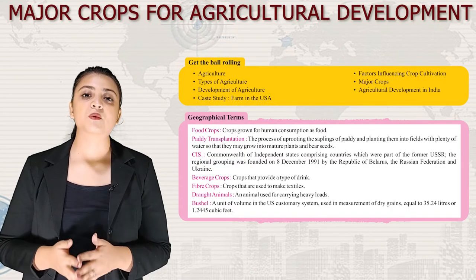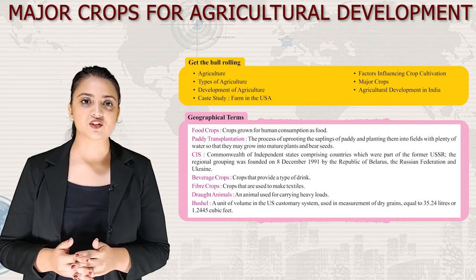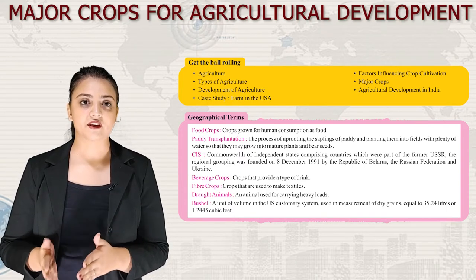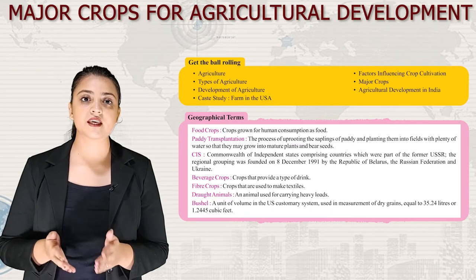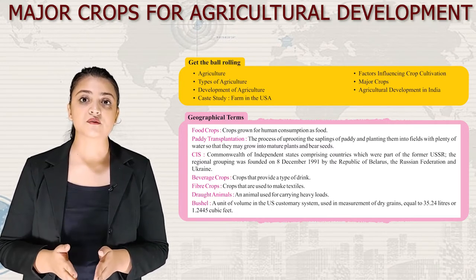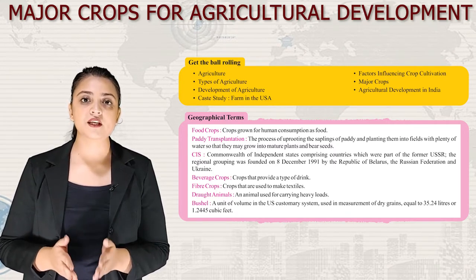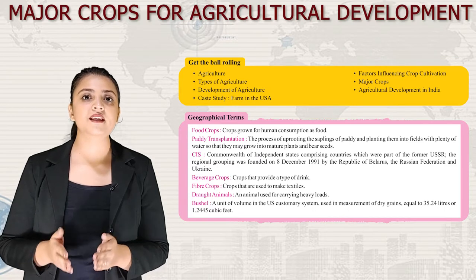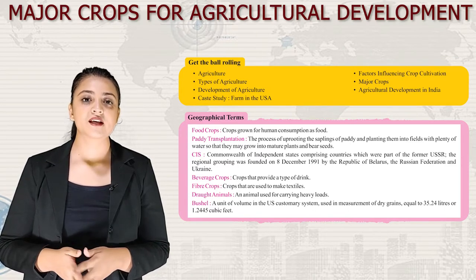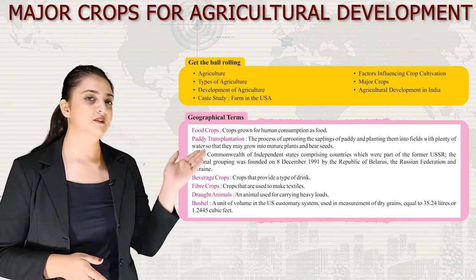Today we are going to learn about agriculture, types of agriculture, development of agriculture, a case study about a farm in the USA, factors affecting crop cultivation, and major crops and agricultural development in India. First, let us start with some geographical terms.